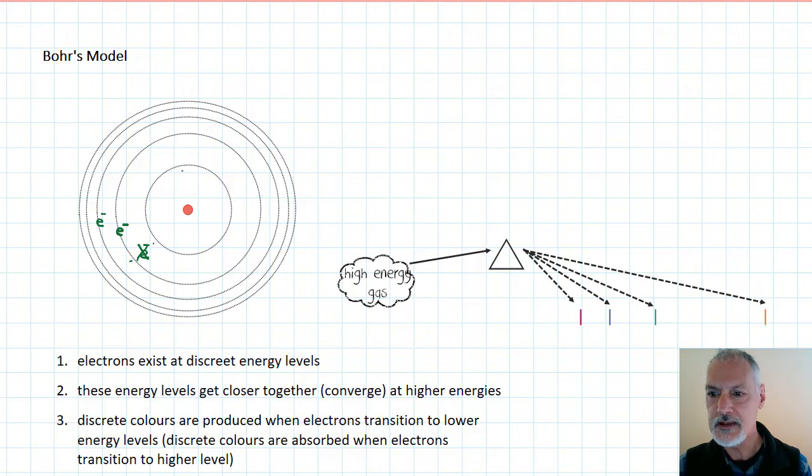He also believed that the further out one moved from the atom, that these orbits or regions where the electrons could be essentially became closer together. Now, what made him think that? Well, we know that as we move from red light over to our purple light, we know that our energy content is going up.